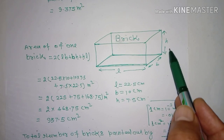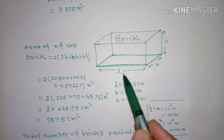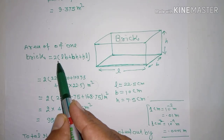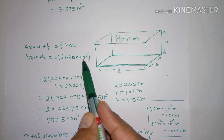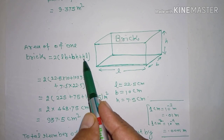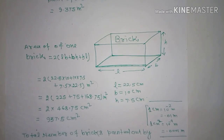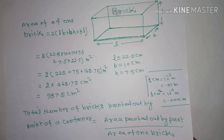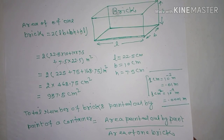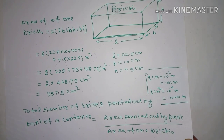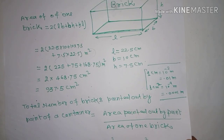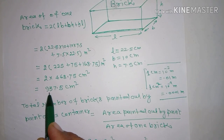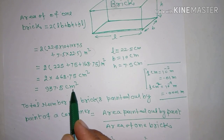Using length, breadth, and height, the total surface area of a brick is 2(LB + BH + HL). Here, L is 22.5 cm, B is 10 cm, and H is 7.5 cm. This gives an area of 937.5 cm square.